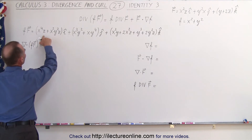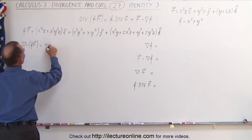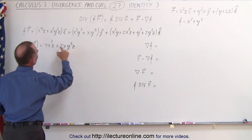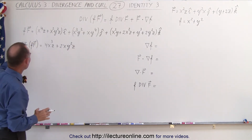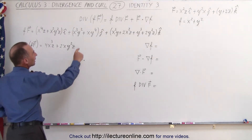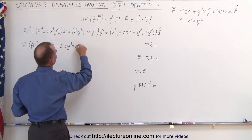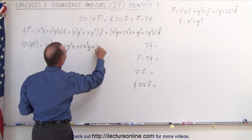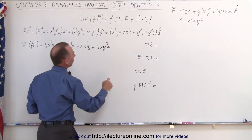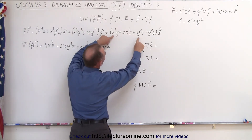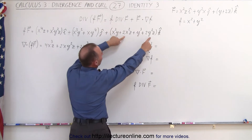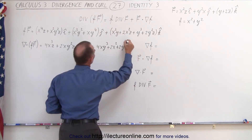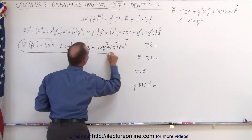The partial with respect to x gives us 4x³z + 2xy²z. Notice it's no longer a vector quantity — when we take the divergence we end up with a scalar. The partial derivative with respect to y gives us 2x³y + 4xy³. Then the partial derivative with respect to z: the first two terms have no z, so they drop out, leaving 2x² + 2y². This is the result of the left side of the identity.